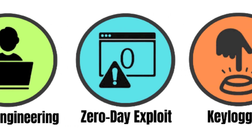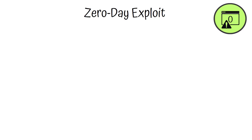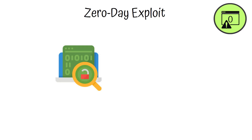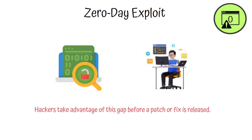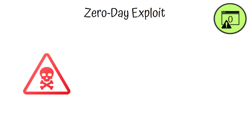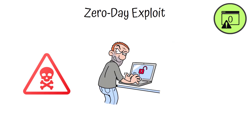A zero-day exploit targets a vulnerability in software that is unknown to the developer. Hackers take advantage of this gap before a patch or fix is released. These attacks are highly dangerous as they give the hacker unrestricted access to the system with no prior warning.